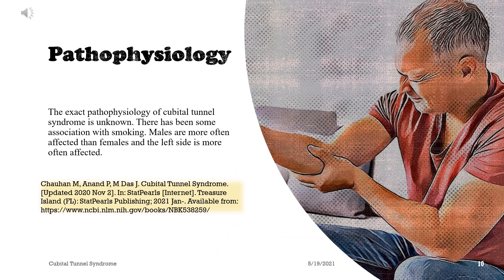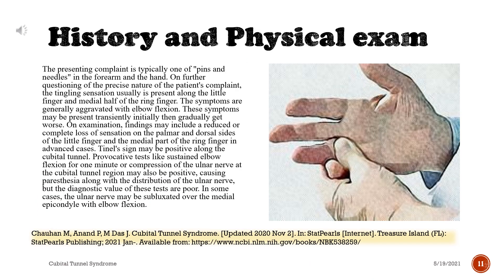Pathophysiology. The exact pathophysiology of cubital tunnel syndrome is unknown. There has been some association with smoking. Males are more often affected than females, and the left side is more often affected. History and physical exam. The presenting complaint is typically pins and needles in the forearm and hand; on further questioning, the tingling sensation is usually present along the little finger and medial half of the ring finger. Symptoms are generally aggravated with elbow flexion and may initially be transient, then gradually worsen.